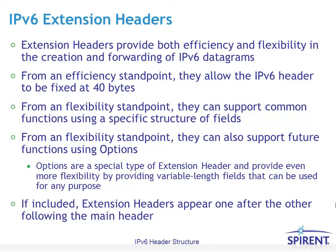IPv6 extension headers are handled more efficiently and give more flexibility than the old options did with IPv4. The implementation enables the IPv6 header to be a fixed length of 40 bytes. From a flexibility standpoint, it allows support for more common functions using a specific structure of fields, and can also support future functions using options that are TLV encoded — type-length-value encoded — providing more variable information with IPv6 extension headers. If included, extension headers appear one after another following the main header.